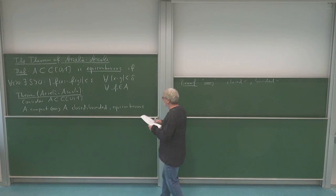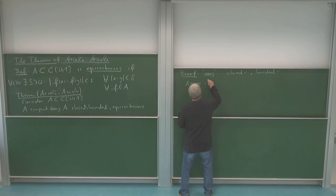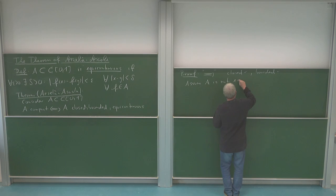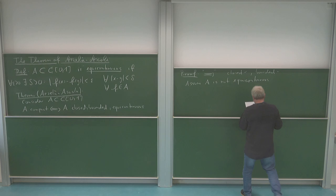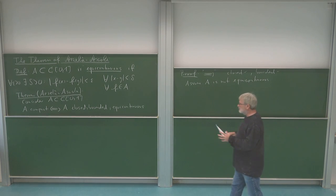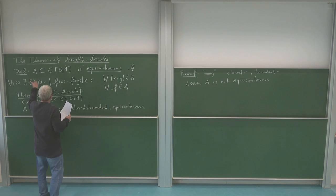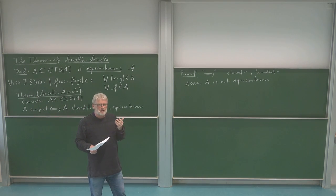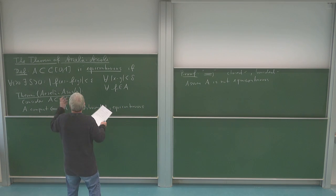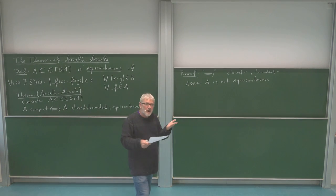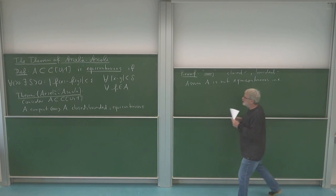We do this by contraposition. We assume A is not equicontinuous and show it cannot be compact. Because compactness is something about sequences, we should now get a sequence with which we can argue further.